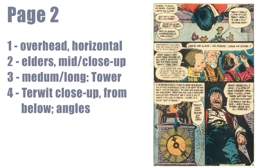On to page two — it's a simpler page with four panels. Toth is accentuating the height here, and usually that is done with verticals. In this case he's doing it with a horizontal, kind of from above Turwit's point of view but looking down on him looking at the kids. It's a really strong panel and puts us in Turwit's shoes on that ledge.